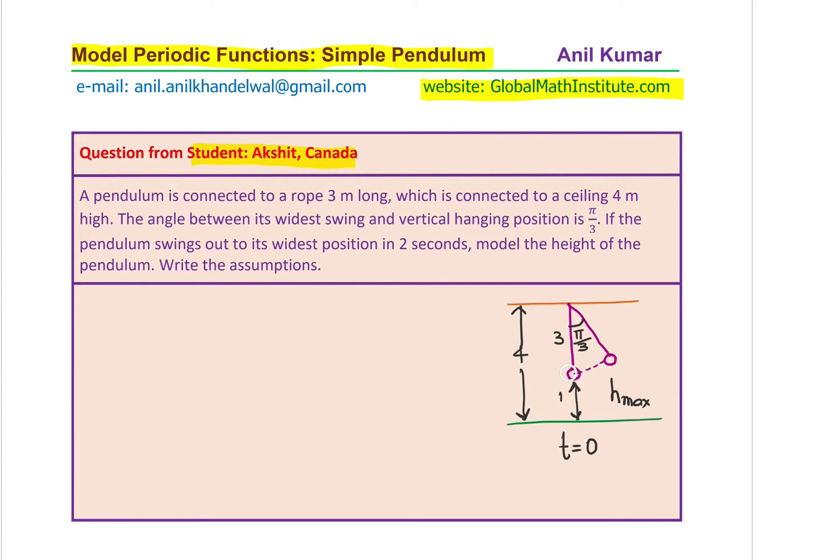The time taken to swing out to its widest position is 2 seconds. That means, it takes 2 seconds to swing from here to there. 2 plus 2 and then 2. That means, 4 here and then coming back will be 2 seconds. The total time period T will be 2 plus 4 plus 2, which is 8 seconds.